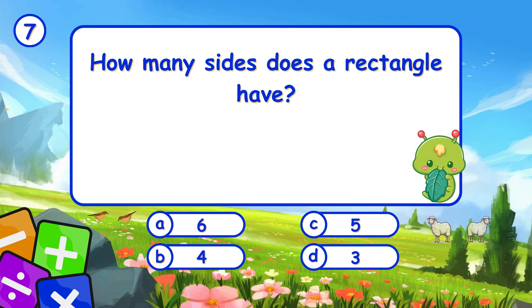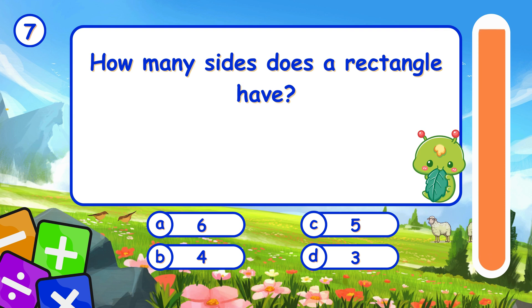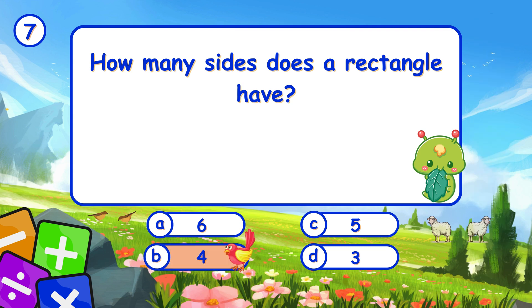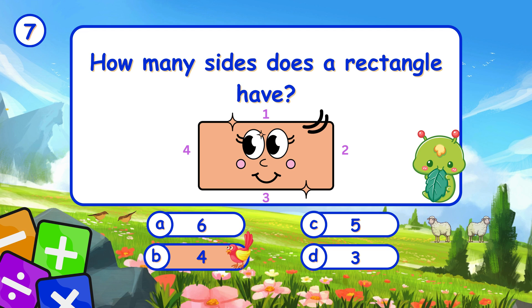How many sides does a rectangle have? It's B, 4. A rectangle has 4 sides.